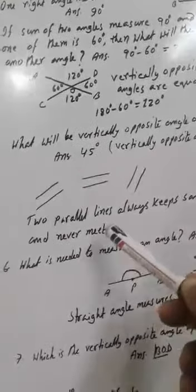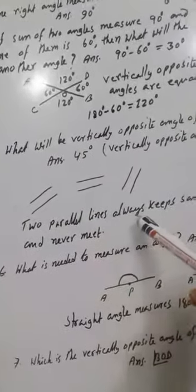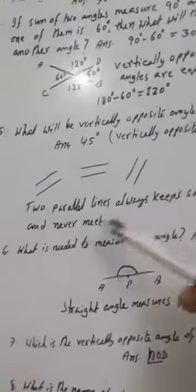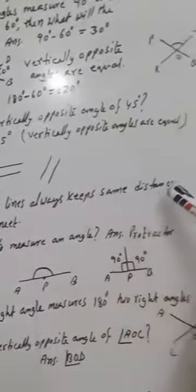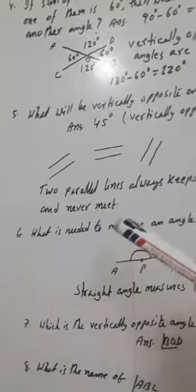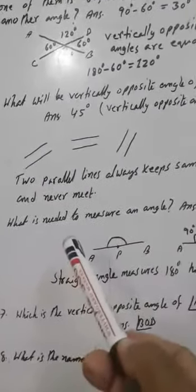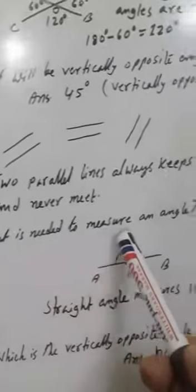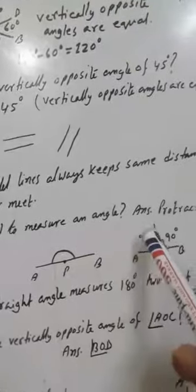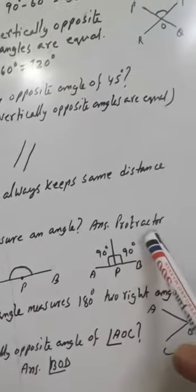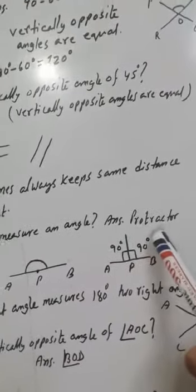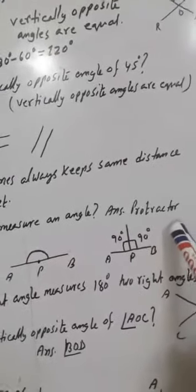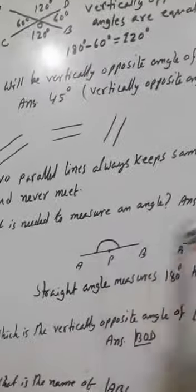These are parallel lines. Two parallel lines always keep the same distance and never meet. To measure an angle, we need a protractor, which is like a half circle — a semi-circle.